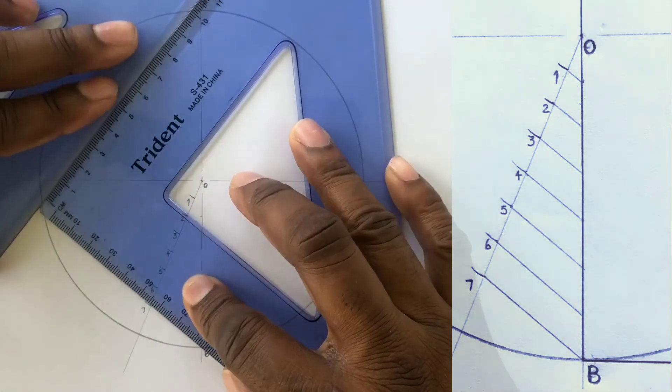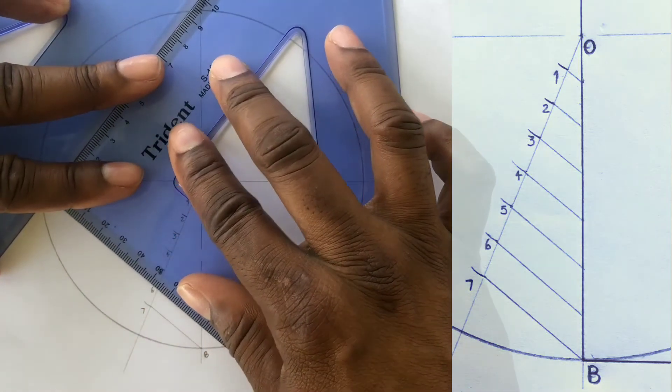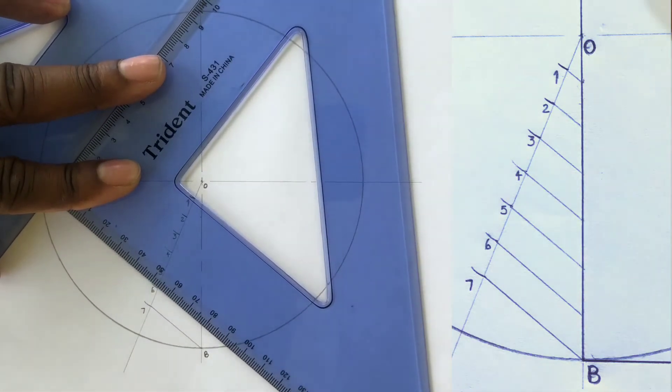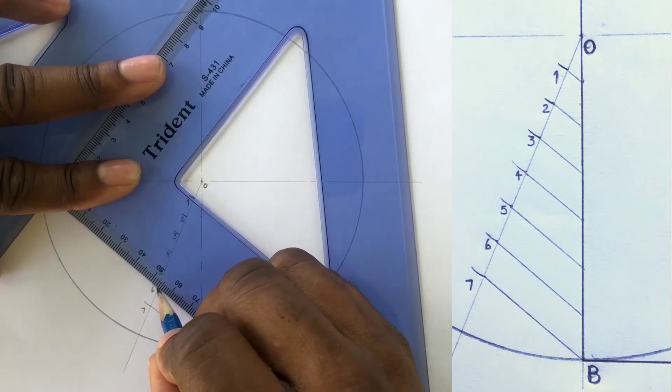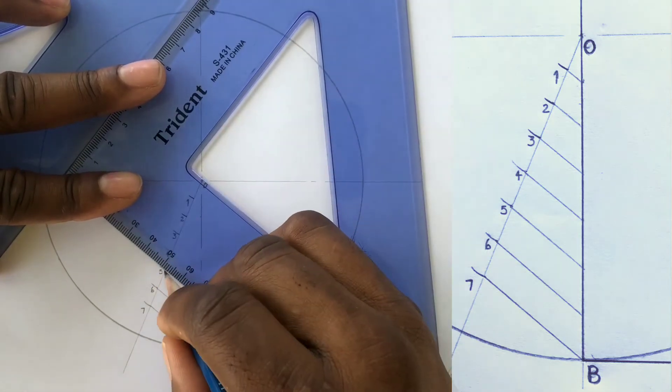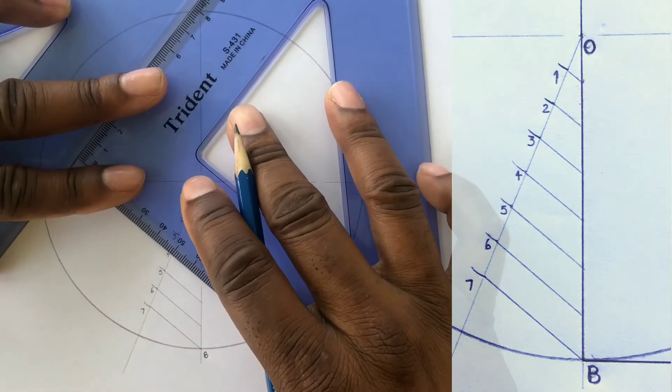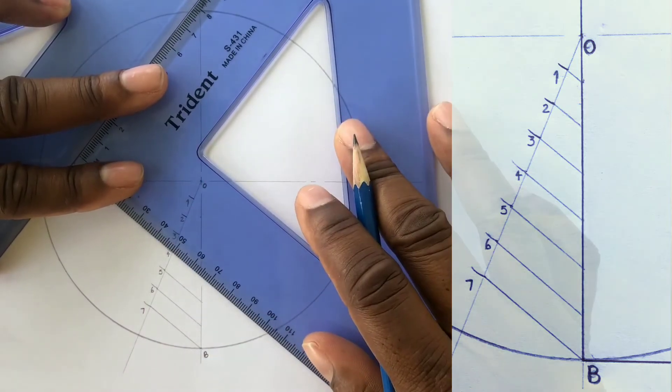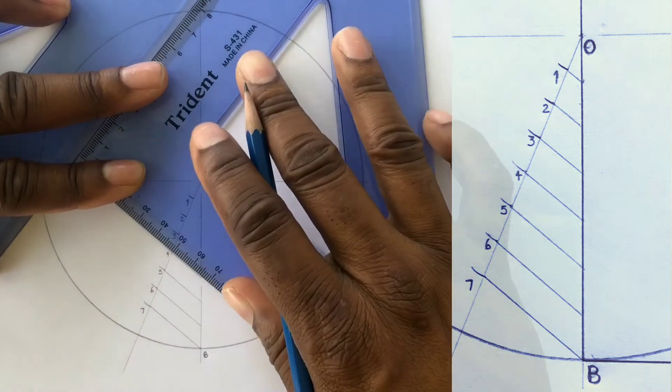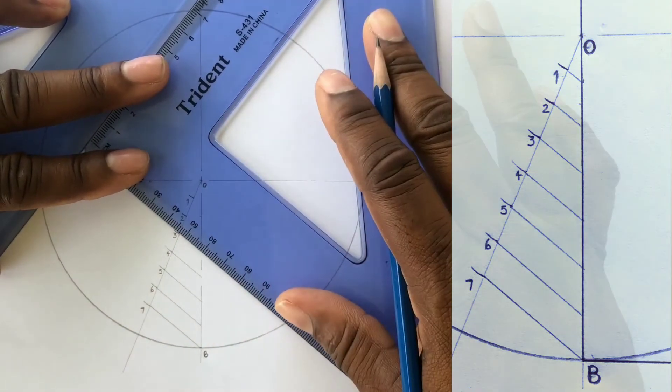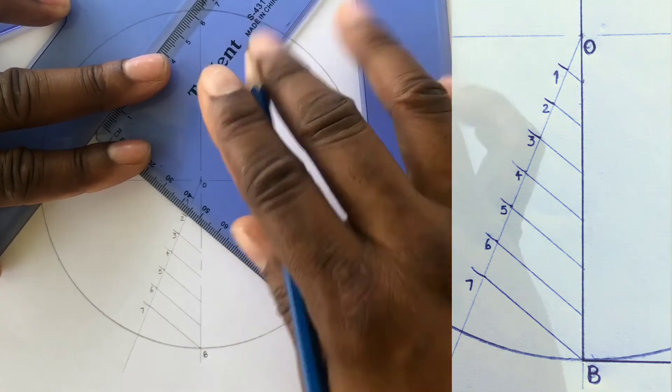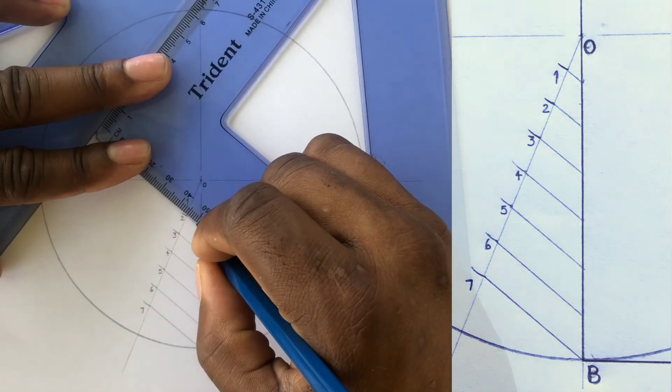Now hold the second set square steady and slide the first set square along the other points to draw lines from these points to touch our OB line. Ensure the second set square is held steady.